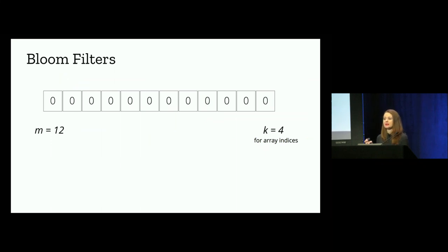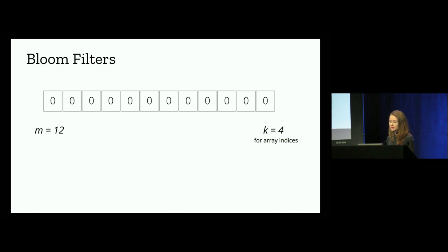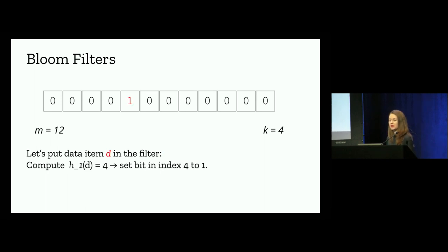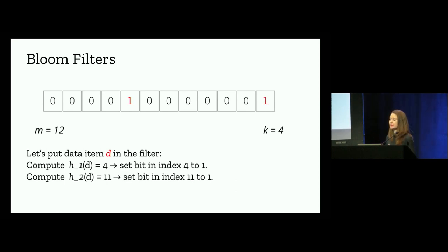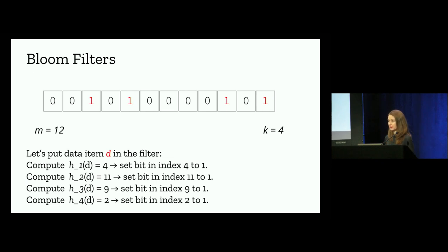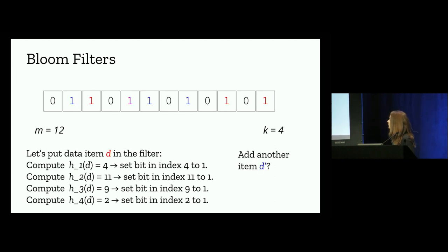A bloom filter is a probabilistic data structure that allows for the insertion of arbitrary-sized elements. We need a bit array of size M and K hash functions for mapping to array indices. To put data item D into the filter: we compute H1(D), giving us 4, so we set the bit at index 4 to 1; compute H2(D), giving us 11, so we set bit at index 11 to 1; and continue setting bits at indices 9 and 2 to 1. If we put another data item into the filter, some of these items may collide on the same index — that is very possible.